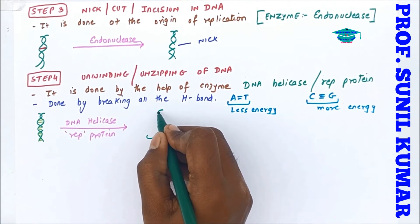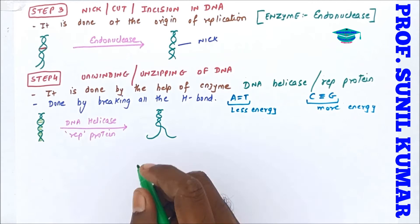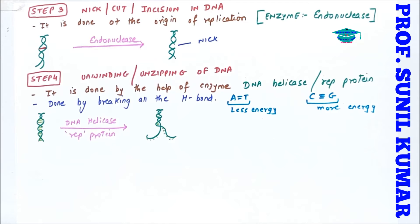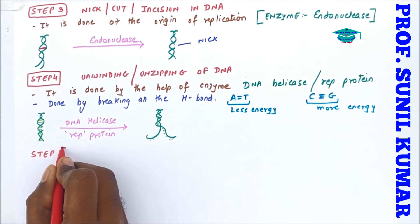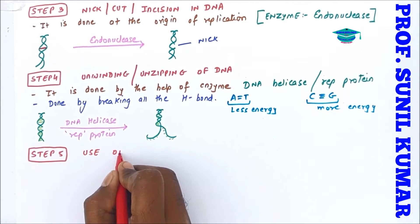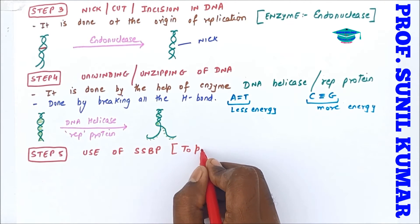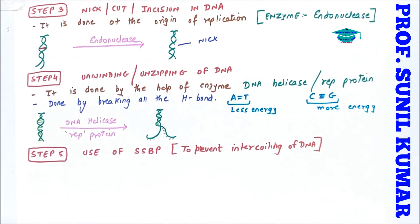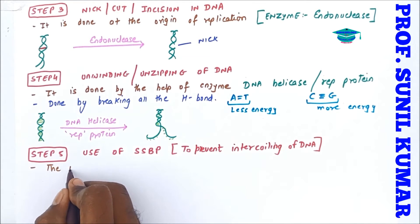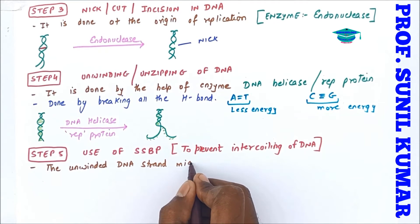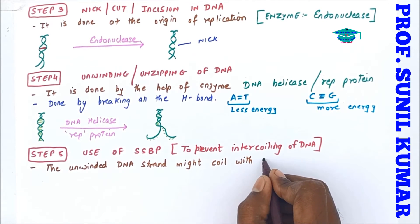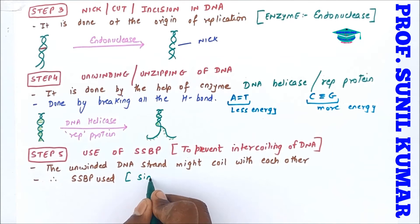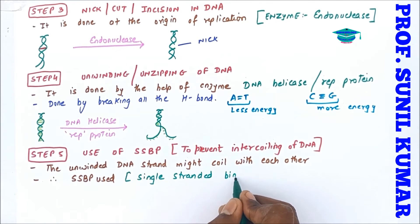Once the hydrogen bonds are broken by DNA helicase, the DNA strands unwind. However, the unwound strands might intercoil among each other. Step five is to prevent intercoiling using SSBP — single-stranded binding protein. The DNA must be maintained in the form of a Y-shaped replicating fork, so SSBP is used to keep the unwound strands straight.